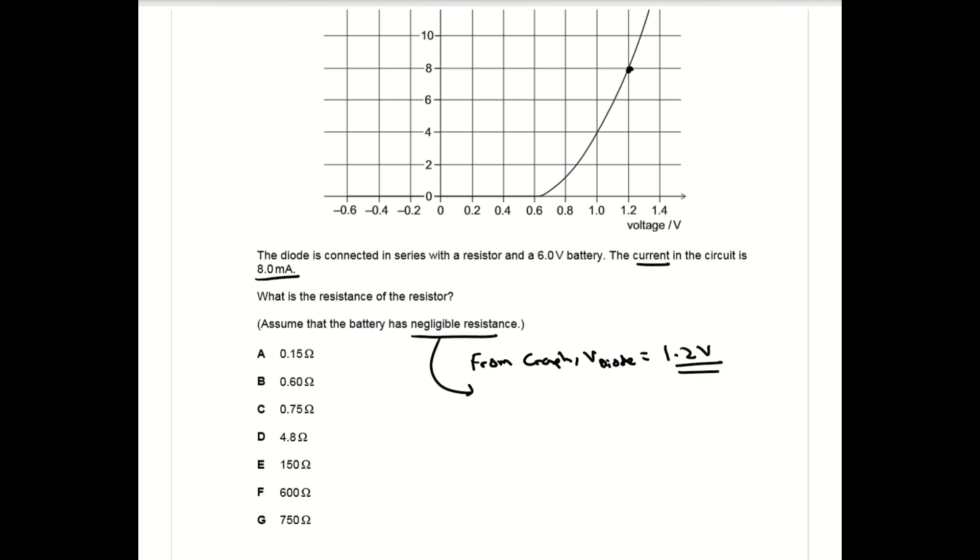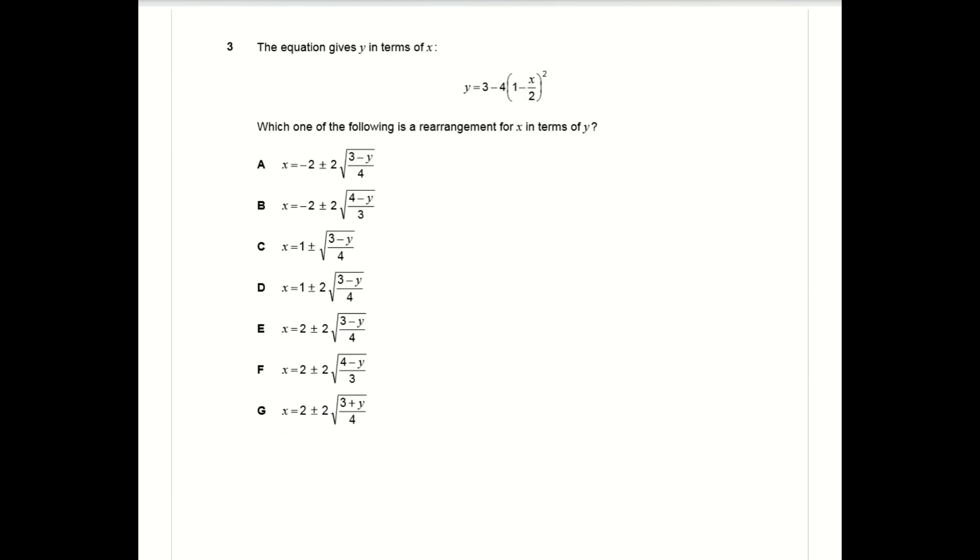You also have the current in the circuit - it's a series circuit so current is the same everywhere, and that's 8 milliamps. So you can work out the resistance of the resistor by dividing 4.8 volts across the resistor by 8 milliamps through it, which gives you 600 ohms.